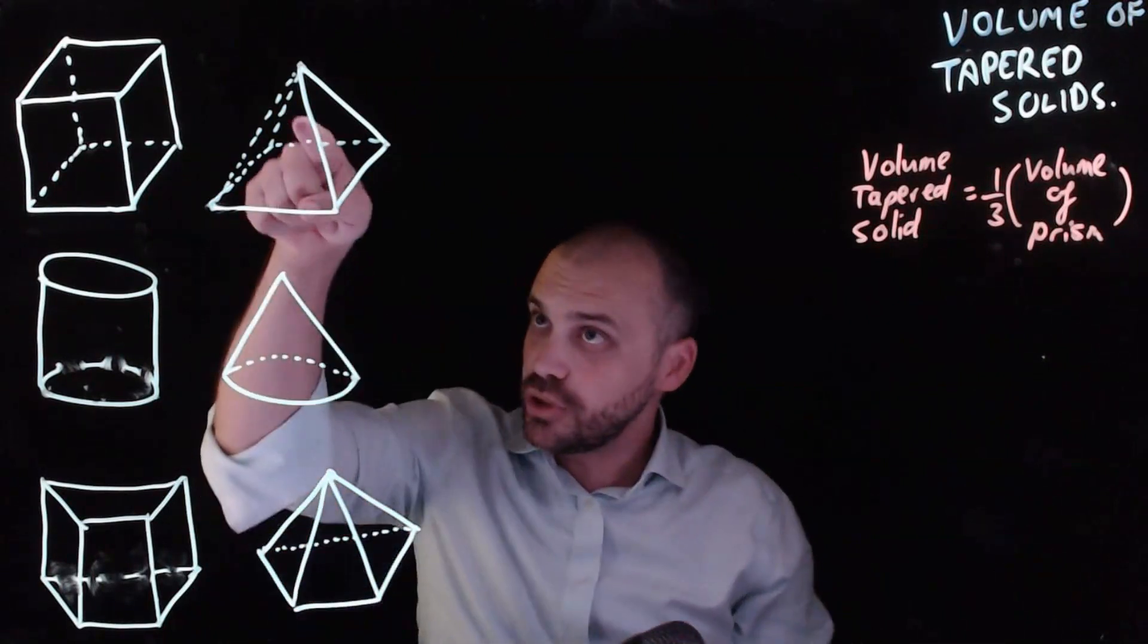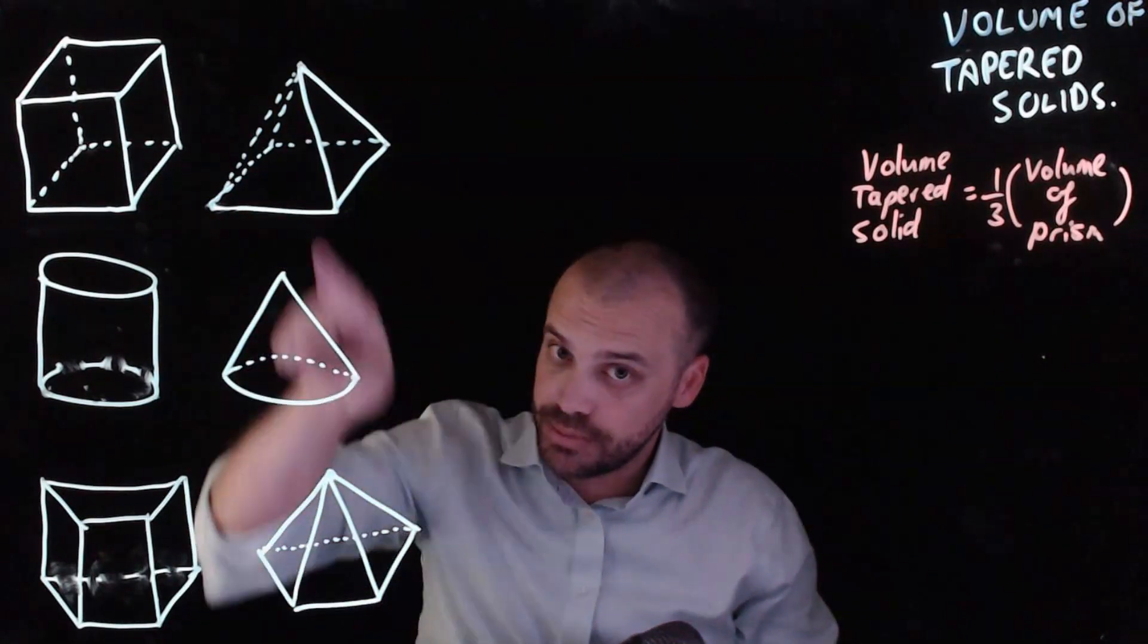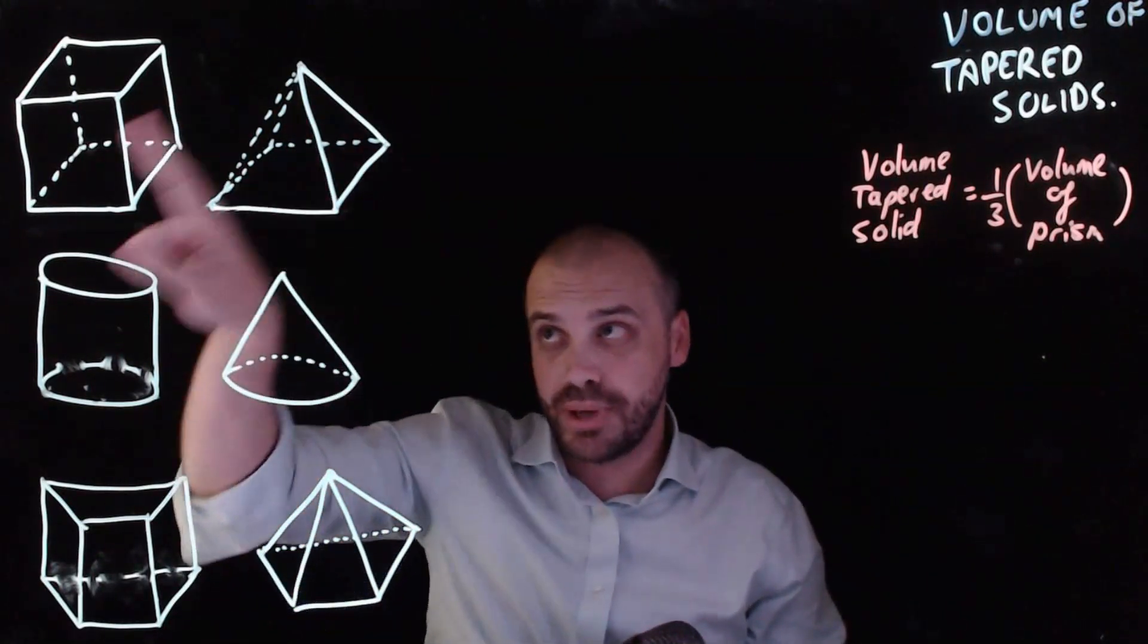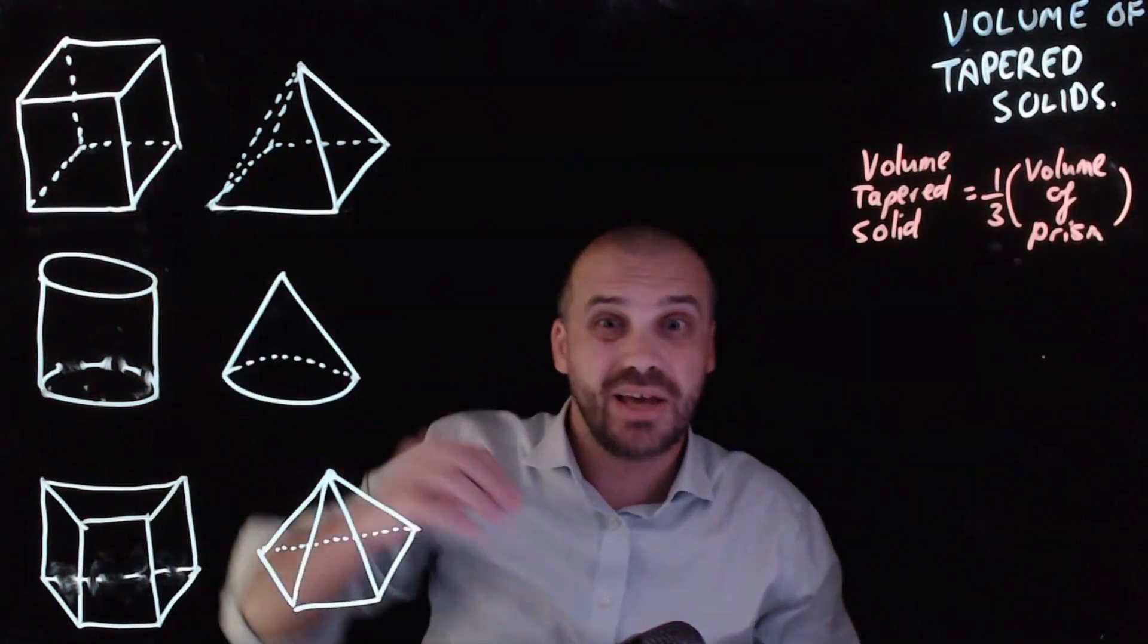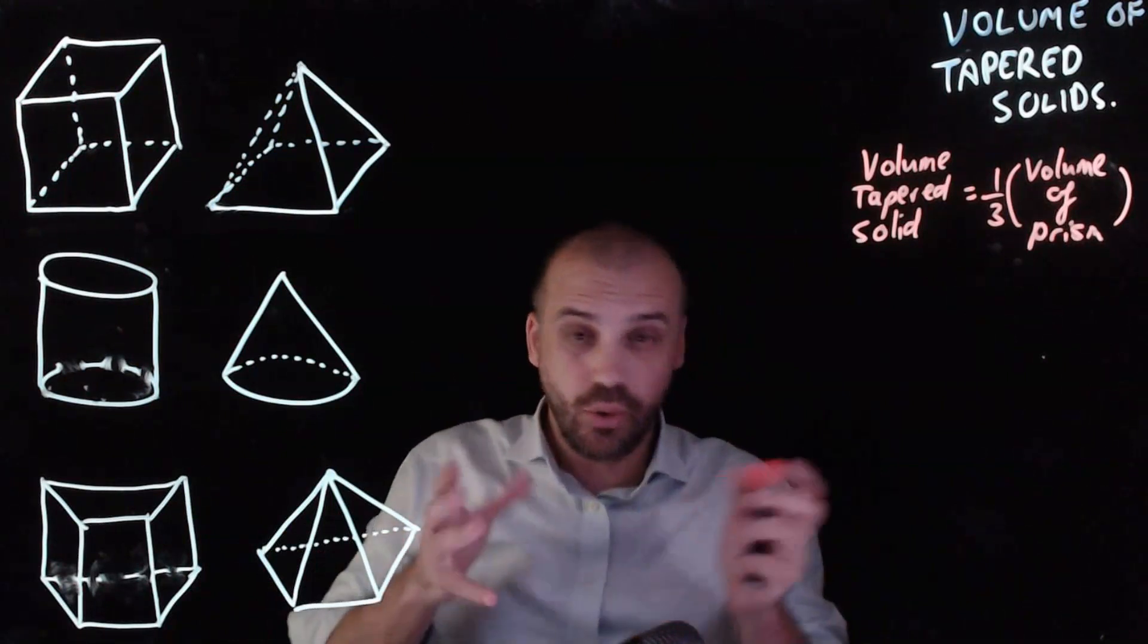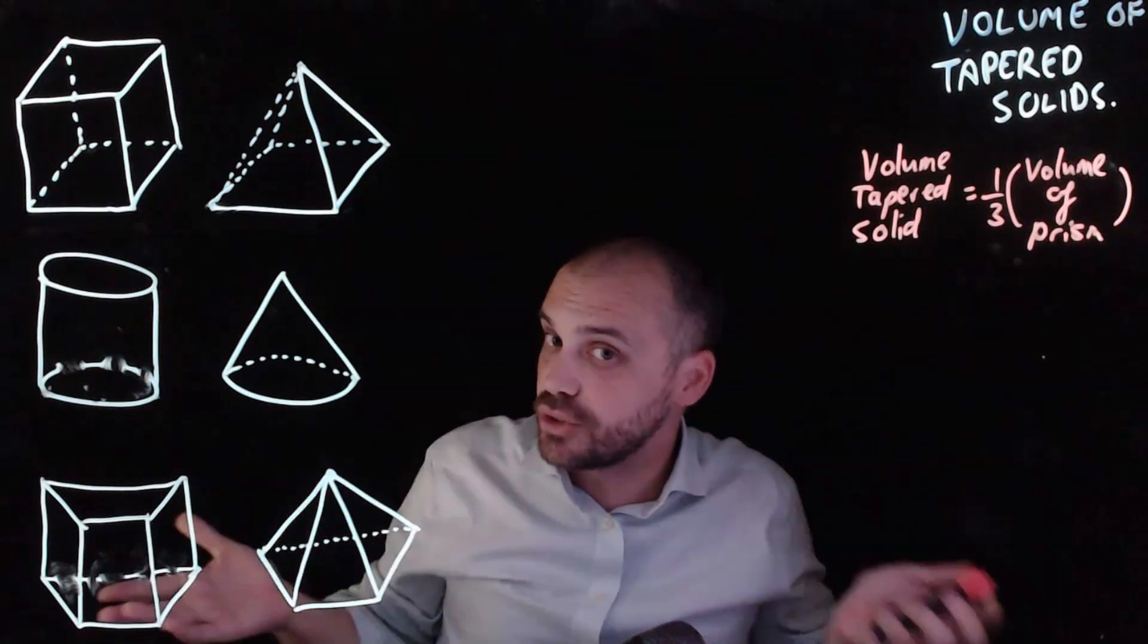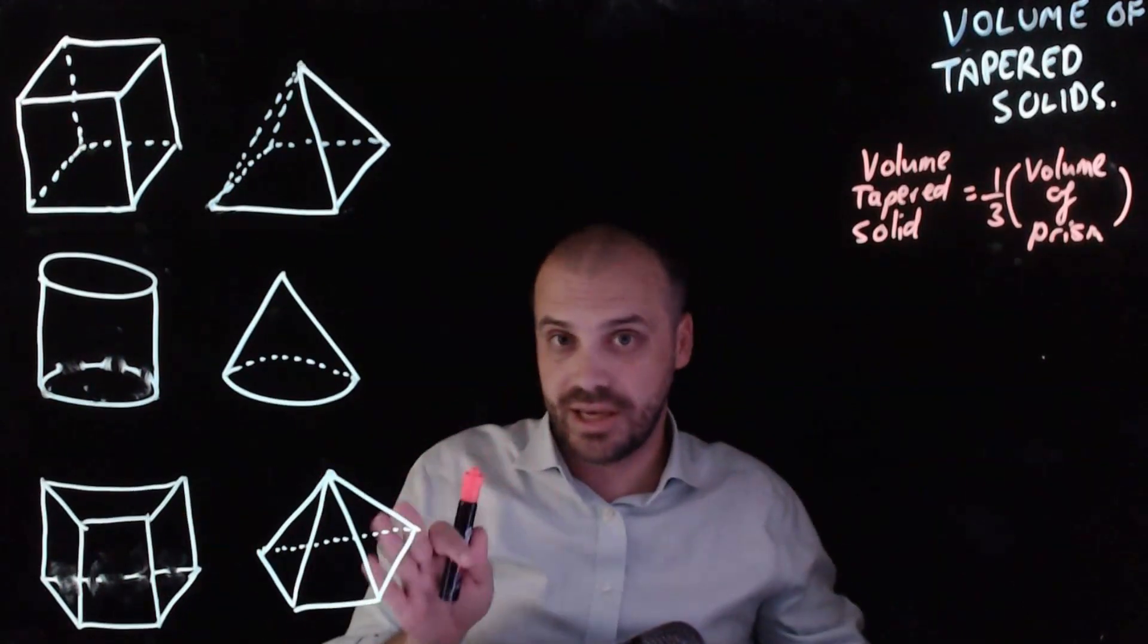So if you want to know the volumes of any of these shapes, just think of its parent prism. Find the volume of the parent prism and divide it by three or multiply it by one-third. It's the same identical thing.